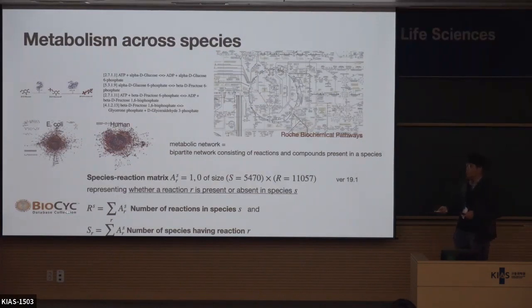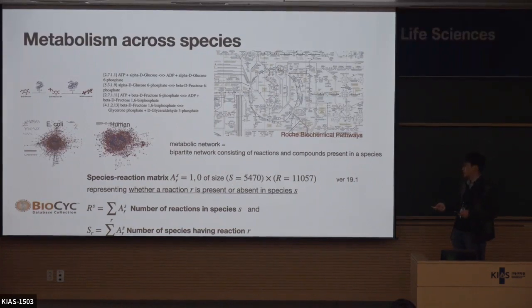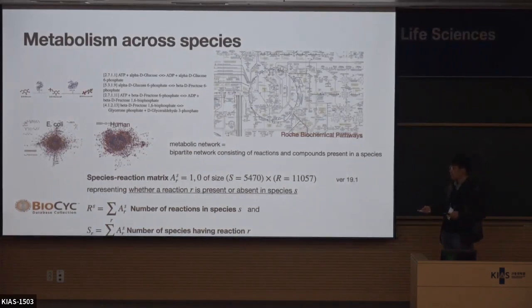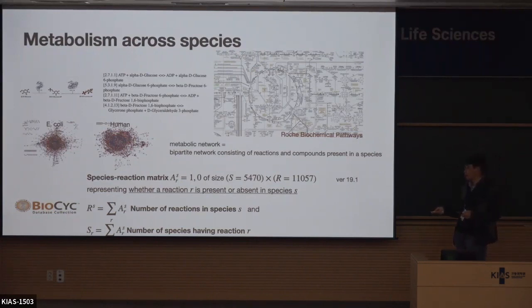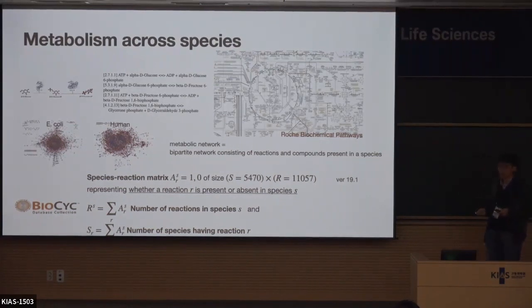We downloaded the data from the BioSeq database. It covers about over 5,000 species and over 10,000 reactions. The starting point of all our research is the species-reaction matrix, which has elements of 1 or 0, indicating whether a reaction R is present or absent in a species S. The main quantities we are interested in are: R(S), the number of reactions in species S, and S(R), the number of species containing the specific reaction R in their metabolism.